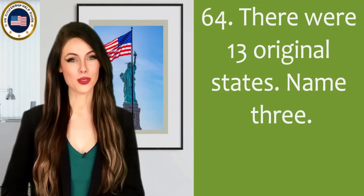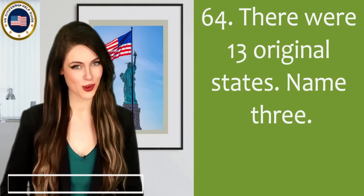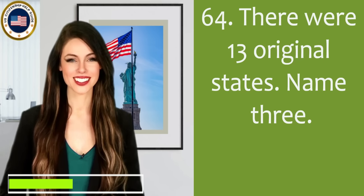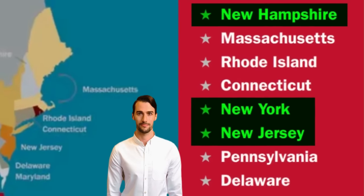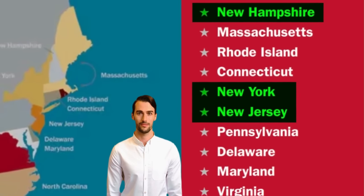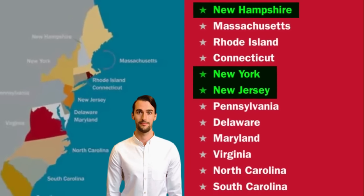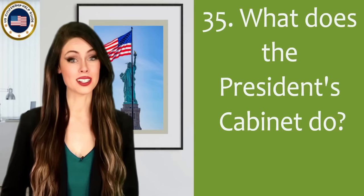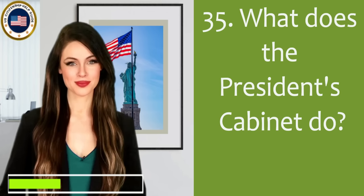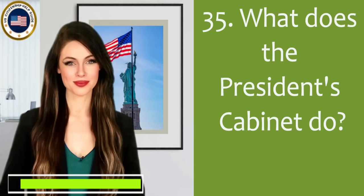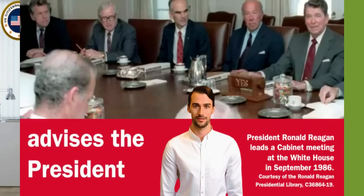There were 13 original states. Name three. New Hampshire, New York, New Jersey. What does the President's Cabinet do? Advises the President.